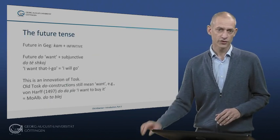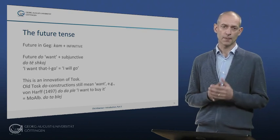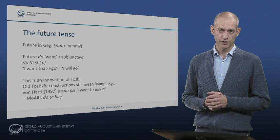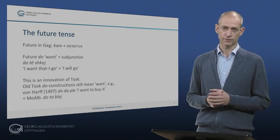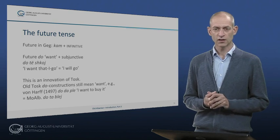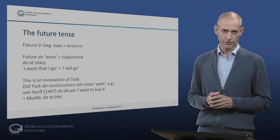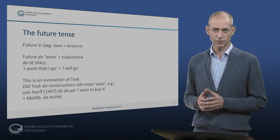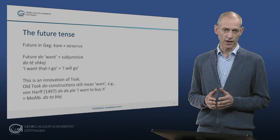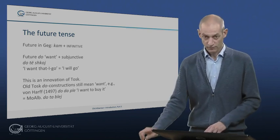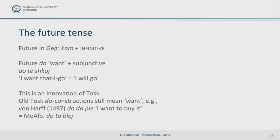The clearest grammatical isogloss between GEG and TOSK is their different formation of the future. In GEG, the future is formed with the auxiliary verb KAM, 'to have,' plus the infinitive. In TOSK, on the other hand, the future is made by means of invariant DO, originally the third singular of 'to want,' plus the subjunctive, as in DO TË SHKOJ for 'I will go.' This DO-future is an innovation of TOSK. In fact, it is not very old, since a phrase in Von Haaf's wordlist from 1497 still possesses the literal meaning 'I want to buy it' rather than 'I will buy it.'